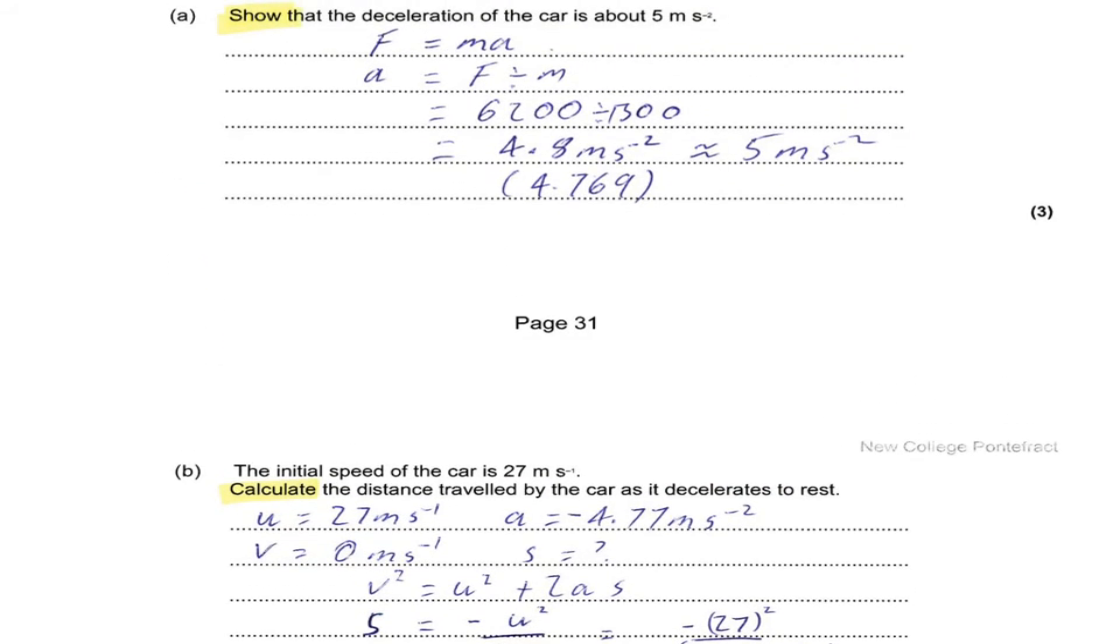Then we get an initial speed of the car, and we want a distance traveled by the car as it decelerates to rest. So I've got an initial velocity, it decelerates to rest, so I know a final velocity is 0. I know the acceleration from the previous part. I've written it down to three significant figures there.